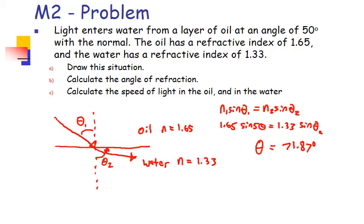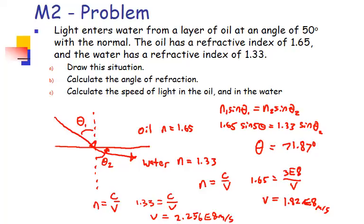Okay, so we should get 71.87 degrees for theta 2. And the speed in oil, for this oil, is 1.82, and then the speed in the water is 2.25 times 10 to the eighth.